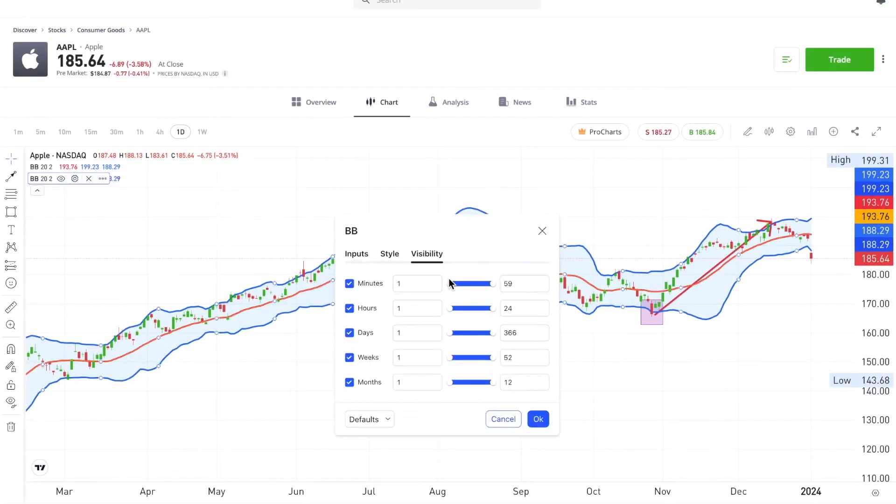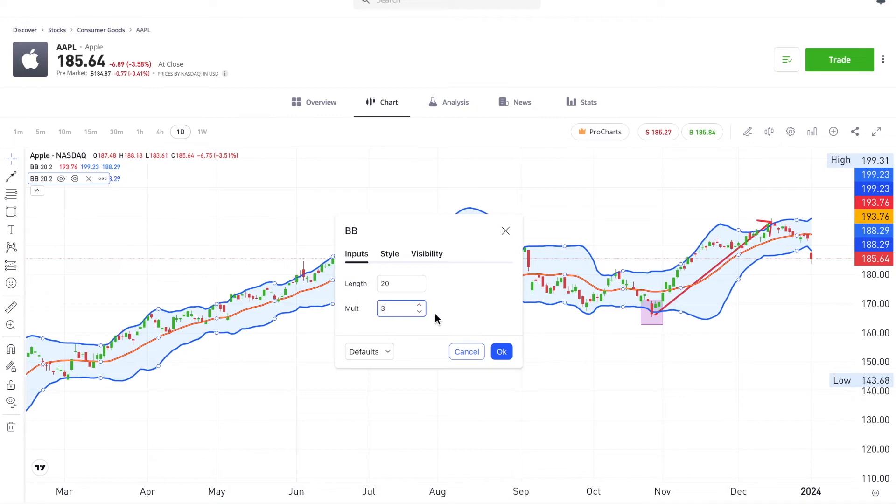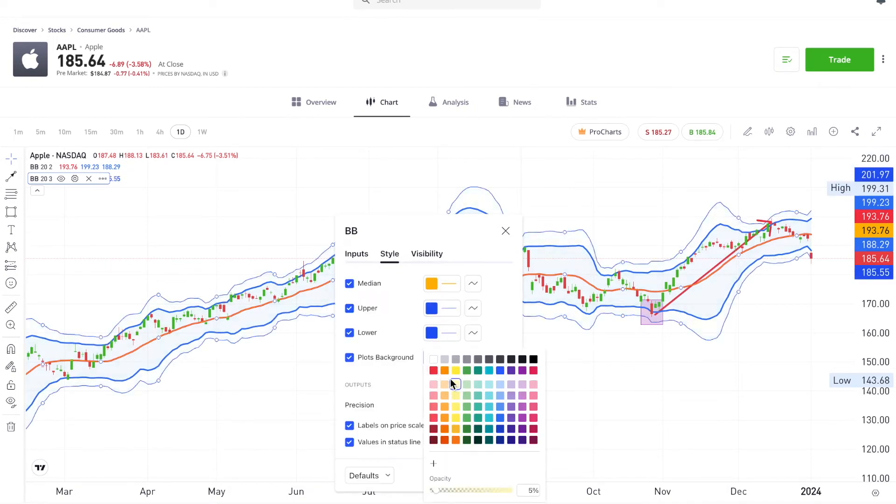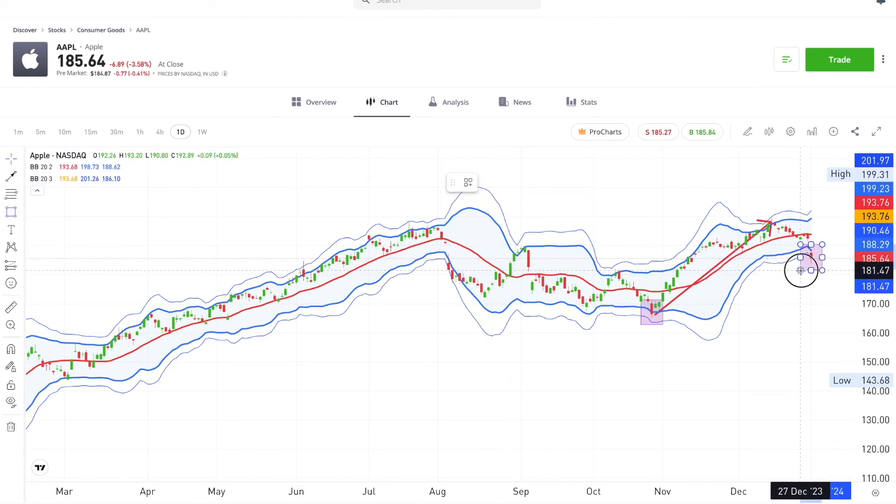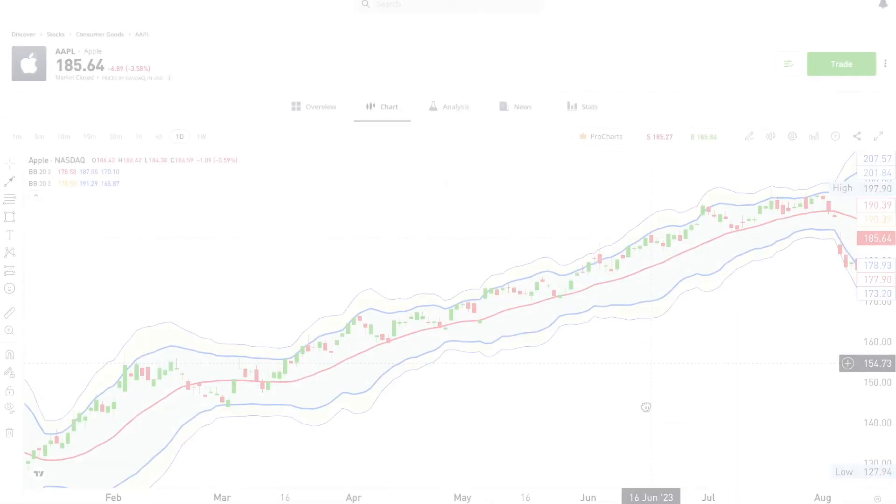Some traders also add a three standard deviation version on top of the two standard deviation. This is to provide an even sharper view of where the price is moving, and if it reaches the three standard deviation band, it means it's a really big outlier.